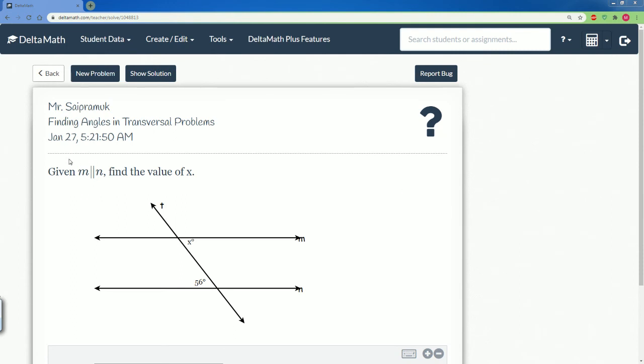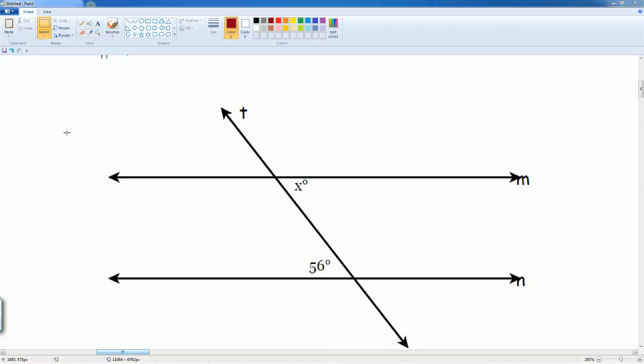Here we have, given that line M is parallel to line N, find the value of X. We have to look at how the angles are related. So I'm going to take the 58 degrees here and I'm gonna slide it up to this parallel line. It's gonna slide up right here, and this is gonna be 56 degrees also because we just slide it by the transformation of translation.